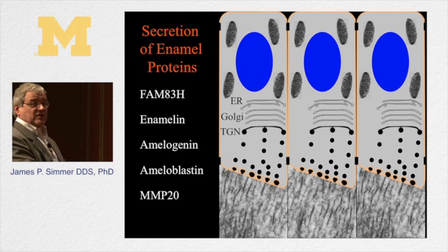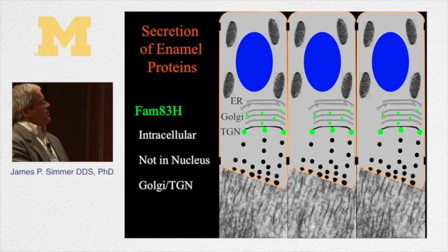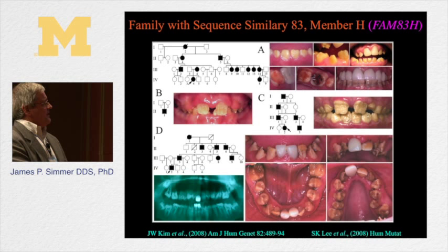FAM83H is the gene that when defective causes the most amelogenesis imperfecta of any single gene. It encodes a protein associated with the trans-Golgi network, presumably helping with the secretion of enamel proteins inside the ameloblast. When FAM83H is defective, you get hypocalcified defects — these teeth crumble very rapidly and are terrible aesthetically.